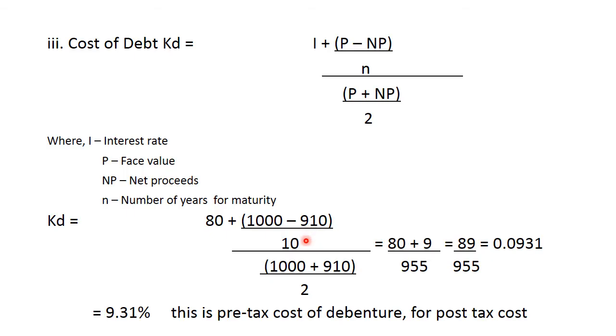And upon 10 since the maturity period is of 10 years. And same thing over here 1000 plus 910 upon 2. So it becomes 80 plus solving this you get 9 upon 955. So it is 89 upon 955 is 0.0931. That comes up to 9.31%.